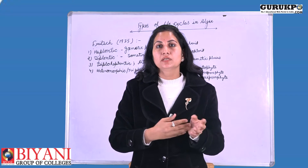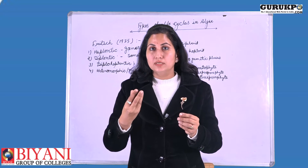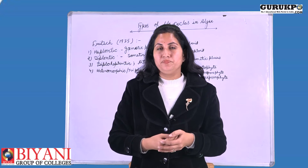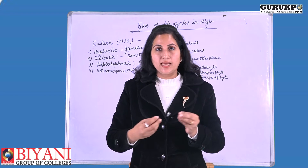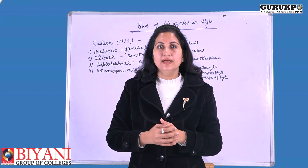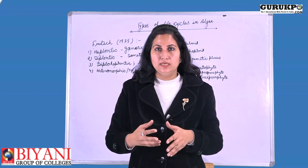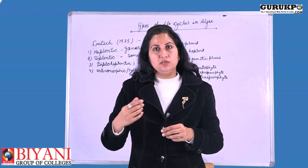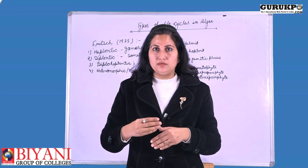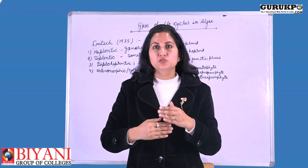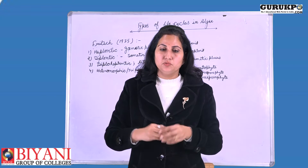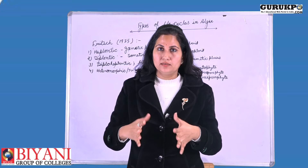The gametophytic generation forms the gametic organs like sex organs — antheridia and archegonia — and they form the male and female gametes. These male and female gametes fuse, and after fusion they form a zygote, and the zygote eventually gives rise to the sporophytic plant. In such a way, this orderly change goes on in the life cycle of the algae. These orderly changes are called the life cycle.